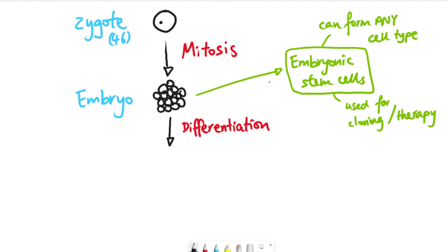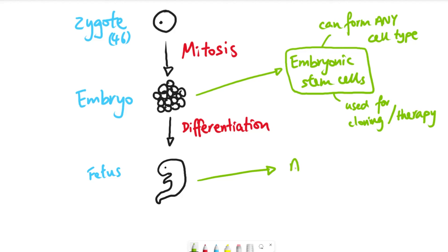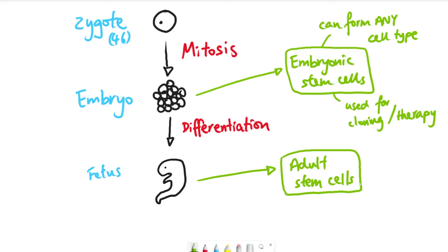The reason it is so good that embryonic stem cells can form any cell type is because that's how we make a whole individual organism — in a human case, we call it a fetus, the scientific word for a baby before it's born. After birth, the organism continues to grow through mitosis and undergoes further differentiation to form more different types of cells. In animals and plants, as an adult — meaning once it's out of the womb — they also have specific types of stem cells called adult stem cells. Adult stem cells can form certain types of cells, but not all.